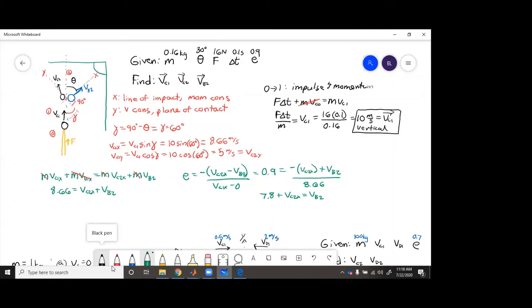So now we take this and plug it in over here. So 8.66 equals vc2x plus vb2, which is 7.8 plus vc2x.